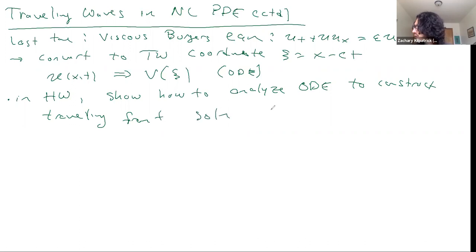We have in that case some value v_minus and v_plus and some speed, called s in the problem or c in this case. We use a slightly different transformation in the case of the viscous Burgers equation where you scale by epsilon.